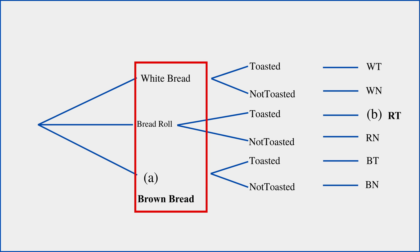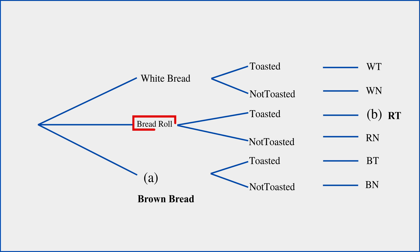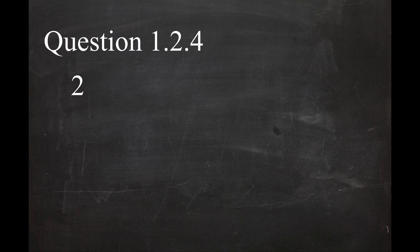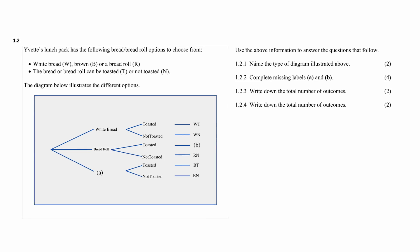In question 1.2.4, you are instructed to calculate the number of toasted bread outcomes. There are three bread options, but one option is a roll, so it's not considered a bread in the traditional sense. Therefore, there are two toasted bread outcomes: the toasted white bread and the toasted brown bread.